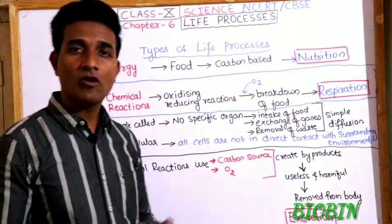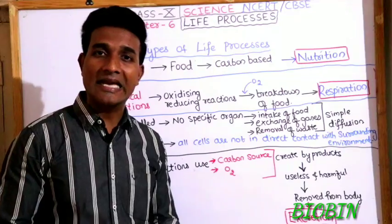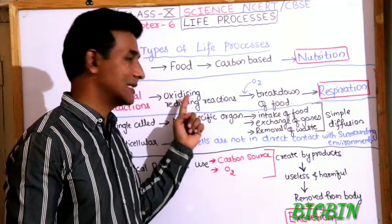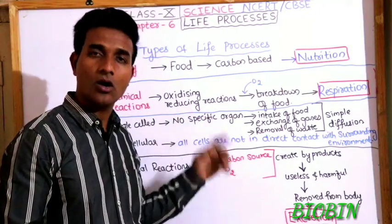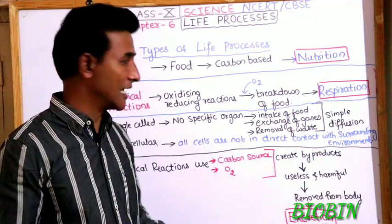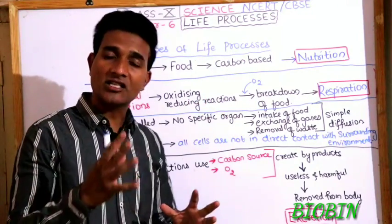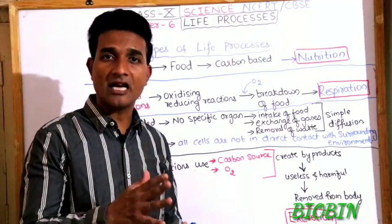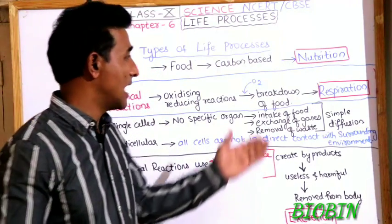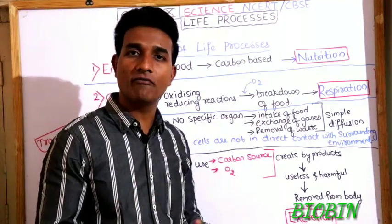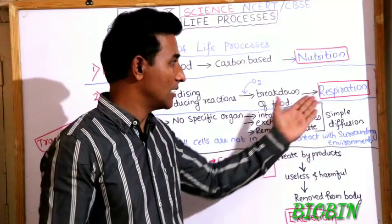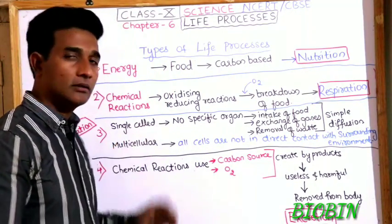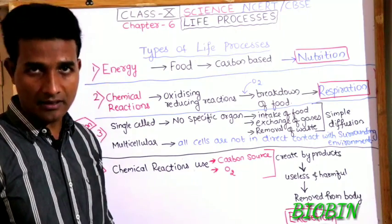In the body, there are different chemical reactions going on — commonly known as oxidation and reduction reactions. These reactions require oxygen to break down food molecules. After breakdown of food molecules, energy is released. That process is called respiration.